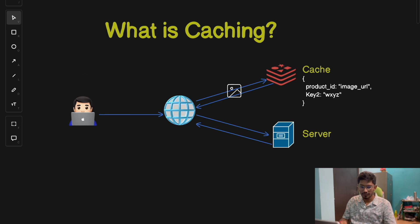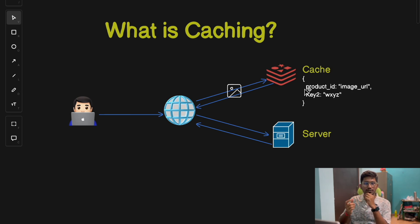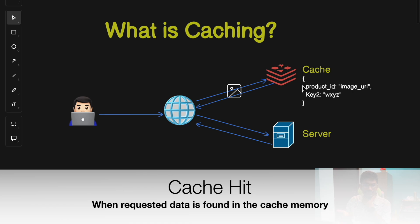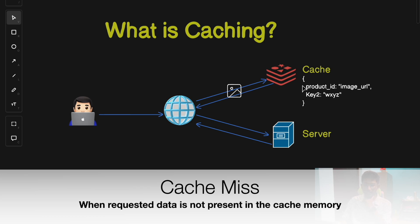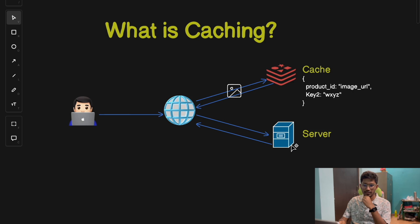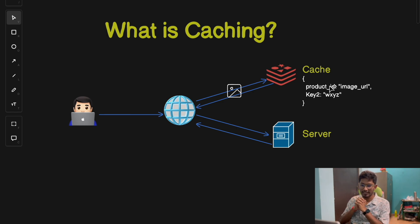Data in a cache is typically stored in a key-value pair structure — think of it like a dictionary where each piece of data, known as the value, is associated with a unique key. When an application requests data, it checks the cache using this key. If the data is in the cache, it is known as a cache hit and is quickly retrieved. If it is not present, it is a cache miss, and the system fetches the data from the original source and then adds it to the cache for future requests.